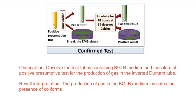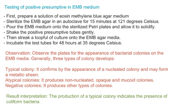Next, we take positive presumptive tubes and prepare the EMB medium, sterilize it, and pour it into petri plates. We allow it to solidify, then streak the culture onto the plates.